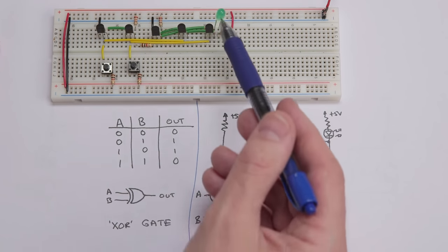So that allows us to build, with five transistors, this other logic element which is the XOR gate. We can see it at work: if we have A on, it comes on; if we have B on, it comes on. But if we do both at the same time, it's not on. And of course, if they're both off, then the output is off as well.